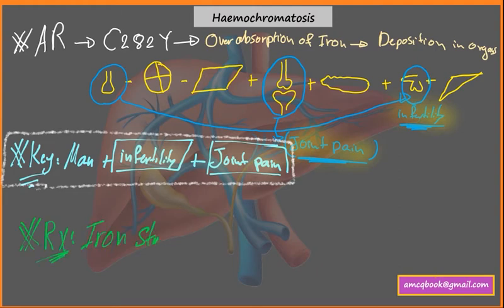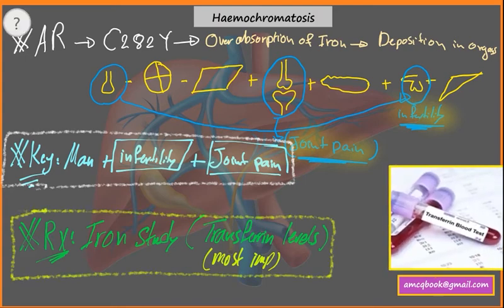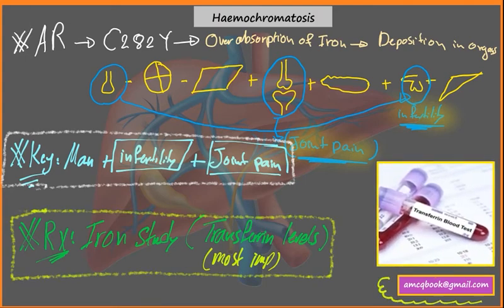For investigation, iron studies are needed, and the most important of these is the transferrin level — this is the most important part of the iron study. A genetic assessment is also needed, which will be covered in the prevention part of the course. That's all for Hemochromatosis for the AMC exam.